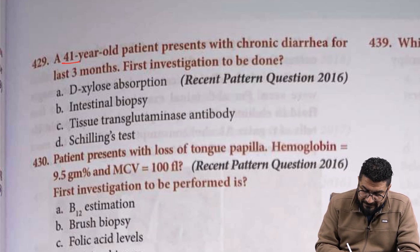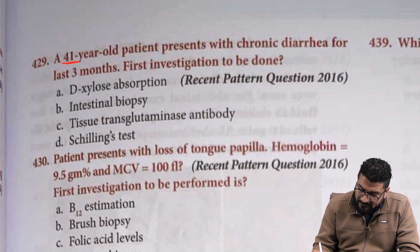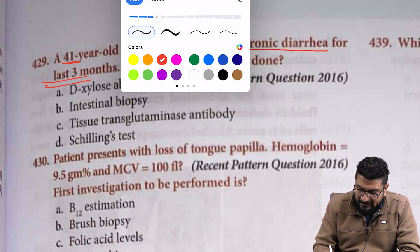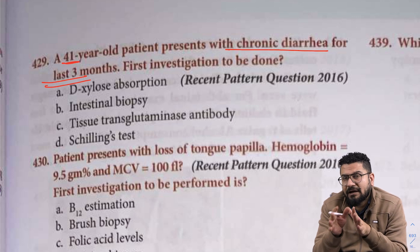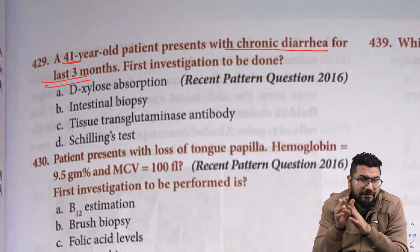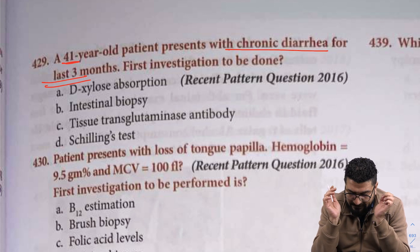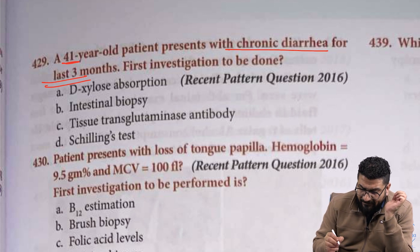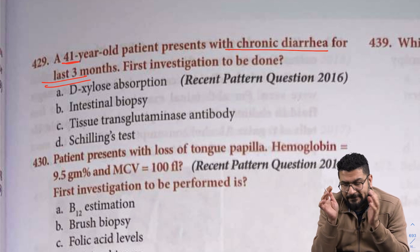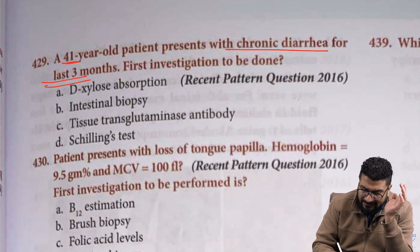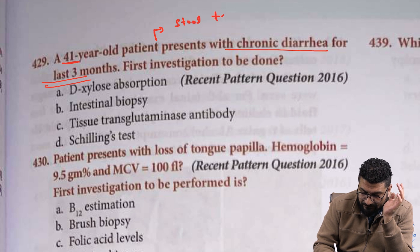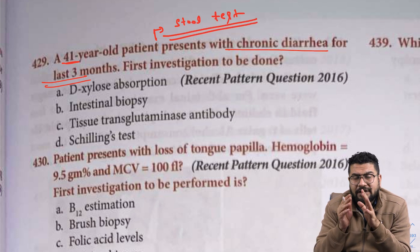41-year-old patient — age itself is the first hint — with chronic diarrhea for more than 3 months. Understand that acute diarrhea in 90 to 95% of cases is due to infection, but chronic diarrhea can occur due to many reasons. So the first test that comes to mind is a stool test. You will do a stool test in any chronic diarrhea patient.